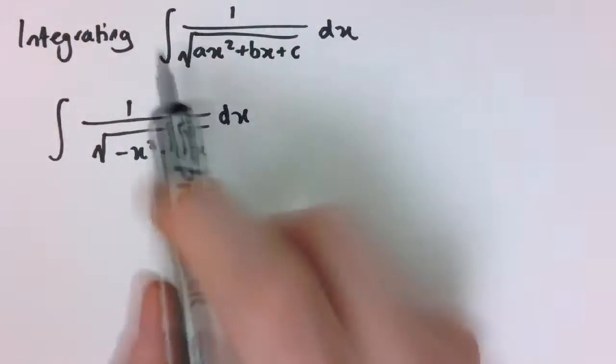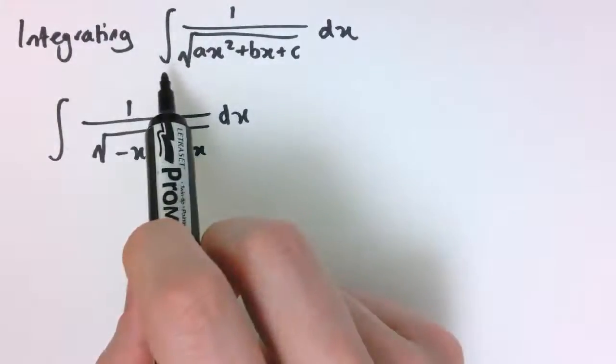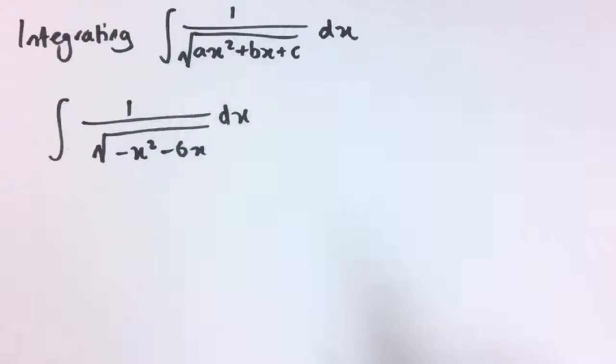In a previous video I showed you how to integrate one over any quadratic function, and in this video we're going to extend that to doing one over the square root of any quadratic function, again through a series of examples.